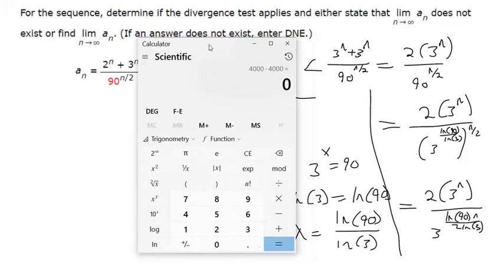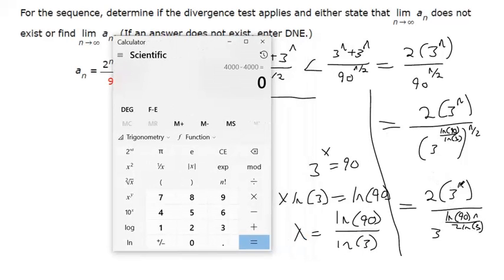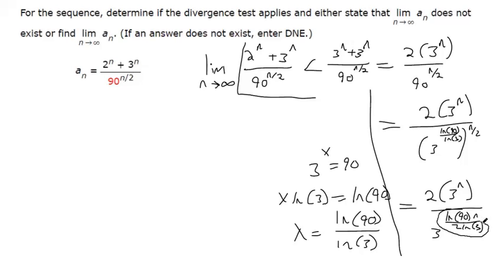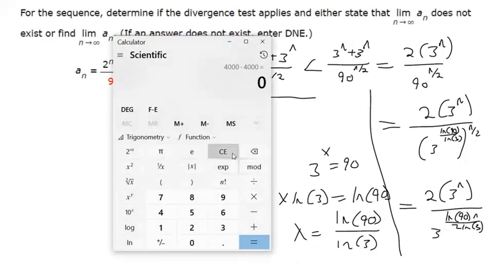Okay, and then now we have something we can compare. This is 3 to the nth power. This is 3 to the natural log of 90 over 2 natural log of 3. So let's figure out if this is bigger than 1. Natural log 90. Oh wait, let's do the denominator first. Natural log of 3 times 2. And then we're going to divide the natural log of 90 by that result.